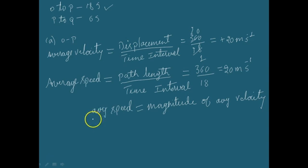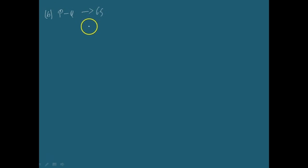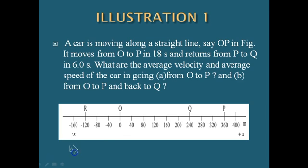Now moving to the second case. They have given that returning from P to Q requires 6 seconds. In the second case, the displacement is from O to P and back to Q. The final position is Q at 240 meters and the initial position is O at 0. So the displacement is plus 240 meters.